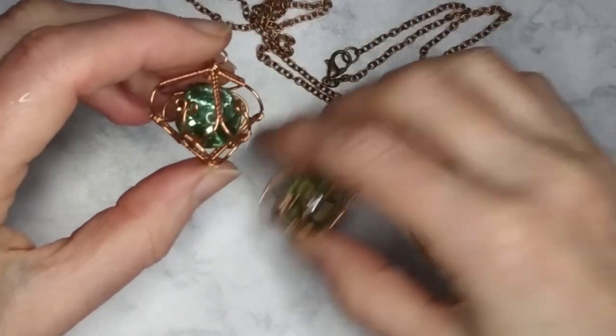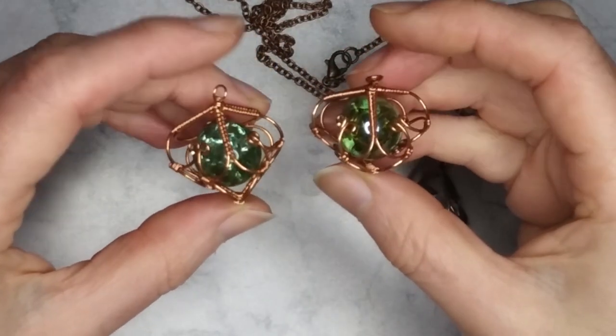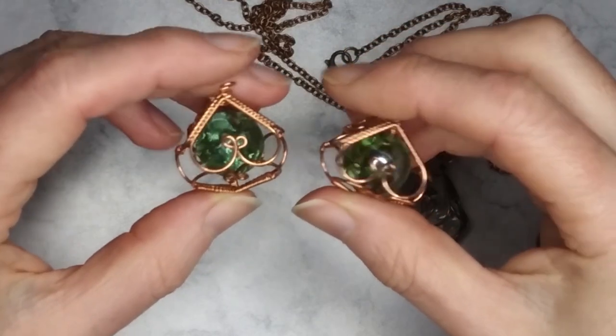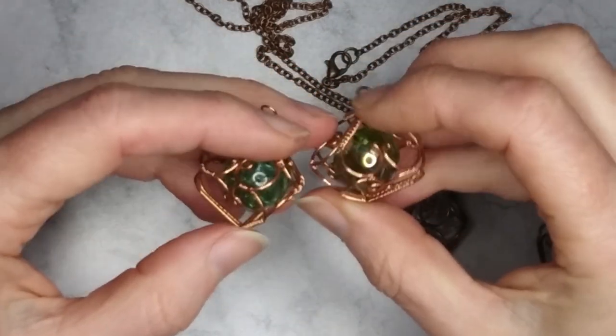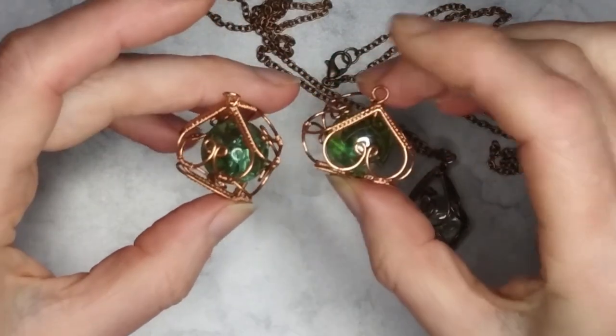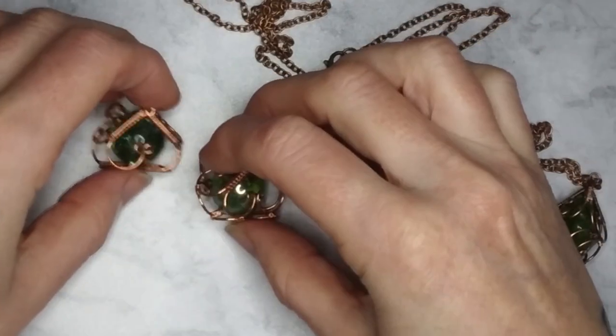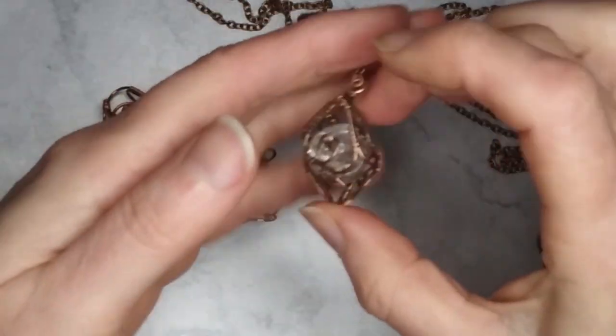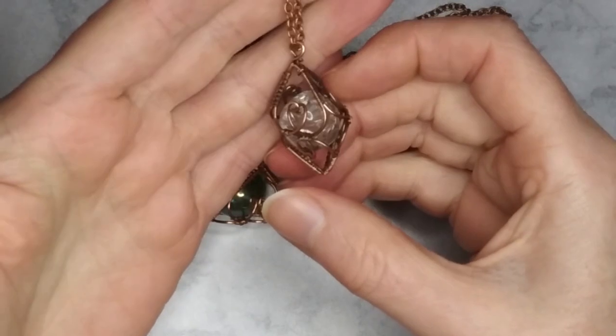These sun catchers would look very effective hung from invisible nylon thread in a window. The pendant design is ideal for caging small tumble stones.